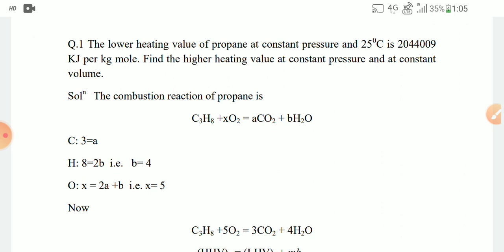The lower heating value of propane at constant pressure and 25°C is 2044009 KJ per kg mole. Find the higher heating value at constant pressure and constant volume.